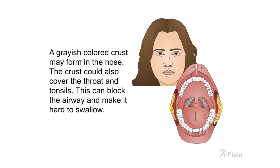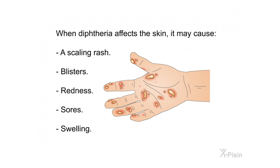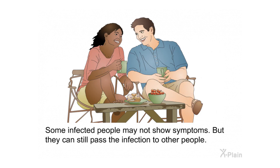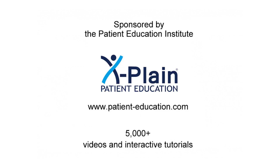A grayish-colored crust may form in the nose, and could also cover the throat and tonsils, which can block the airway and make it hard to swallow. When diphtheria affects the skin, it may cause a scaling rash, blisters, redness, sores, and swelling. When diphtheria affects the eye, it may cause a discharge that can irritate the skin surrounding the eye. Some infected people may not show symptoms but can still pass the infection to others.